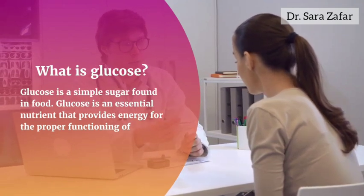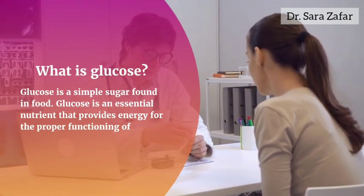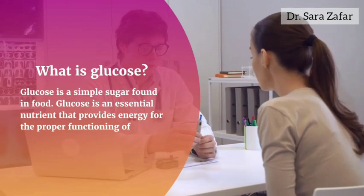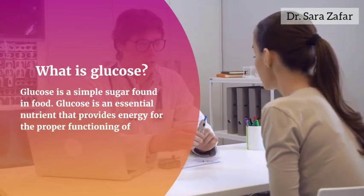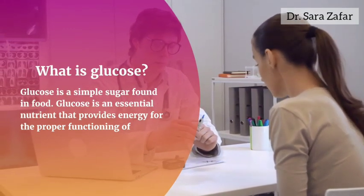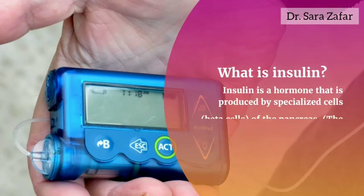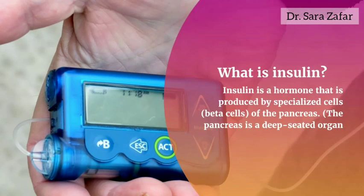Now we will talk about glucose and insulin. Glucose is a simple sugar found in food and is an essential nutrient that provides energy for the proper functioning of the body. Insulin is a hormone produced by specialized cells — the beta cells of the pancreas, which is a deep-seated organ.